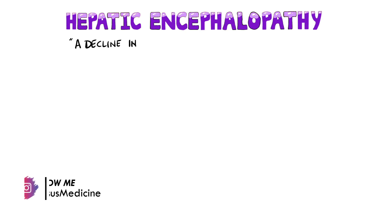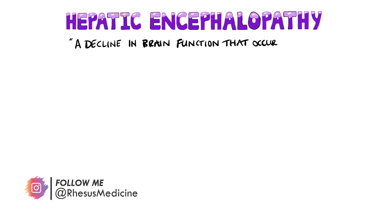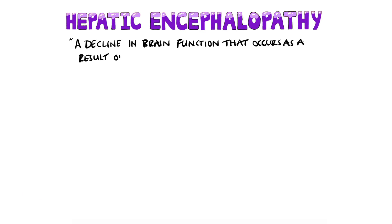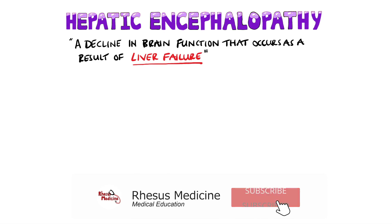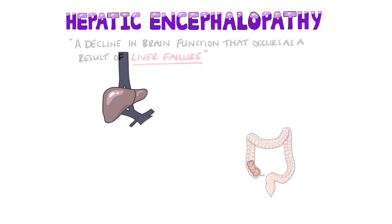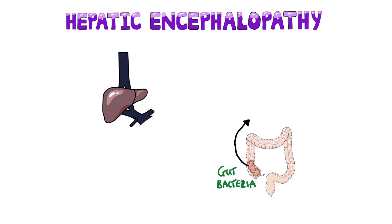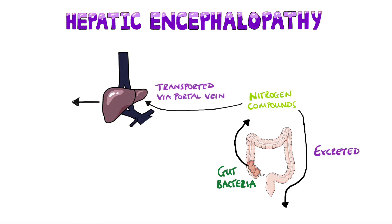Hepatic encephalopathy is a decline in brain function that occurs as a result of liver failure. In healthy subjects, the nitrogen-containing compounds that are generated by gut bacteria are either excreted or transported into the liver via the portal vein, where they are mostly metabolized through the urea cycle.